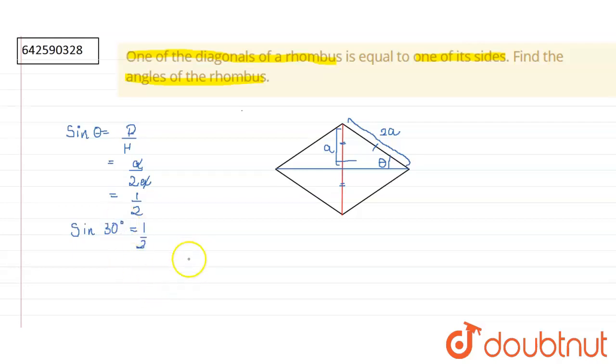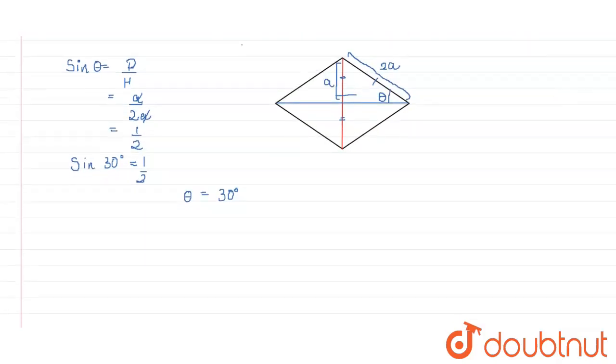So we can say that the value of theta is 30 degrees. Now, since the value of theta is 30 degrees, the value of this complete angle will be 60 degrees.